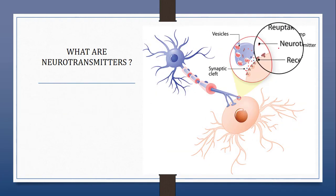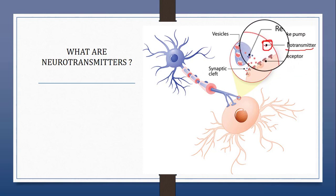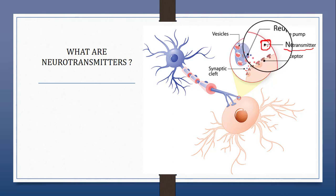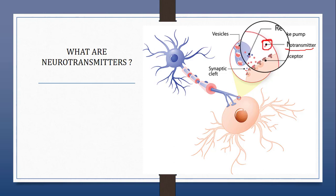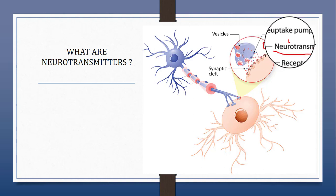Neurotransmitters are endogenous chemicals that enable communication within the nervous system and between the nervous system and the rest of the body. They relay information between individual neurons and ultimately regulate a wide range of bodily functions. There are various classes of neurotransmitters with different functions and mechanisms of action. Neurotransmitter levels and functions are crucial to maintain homeostasis, and if altered, can lead to disease.